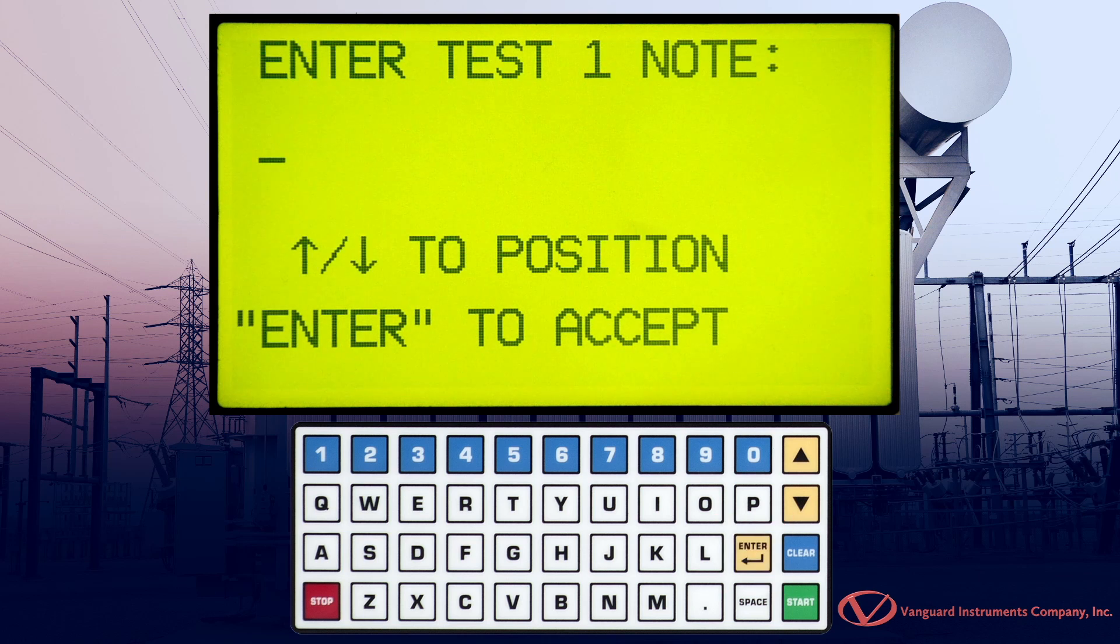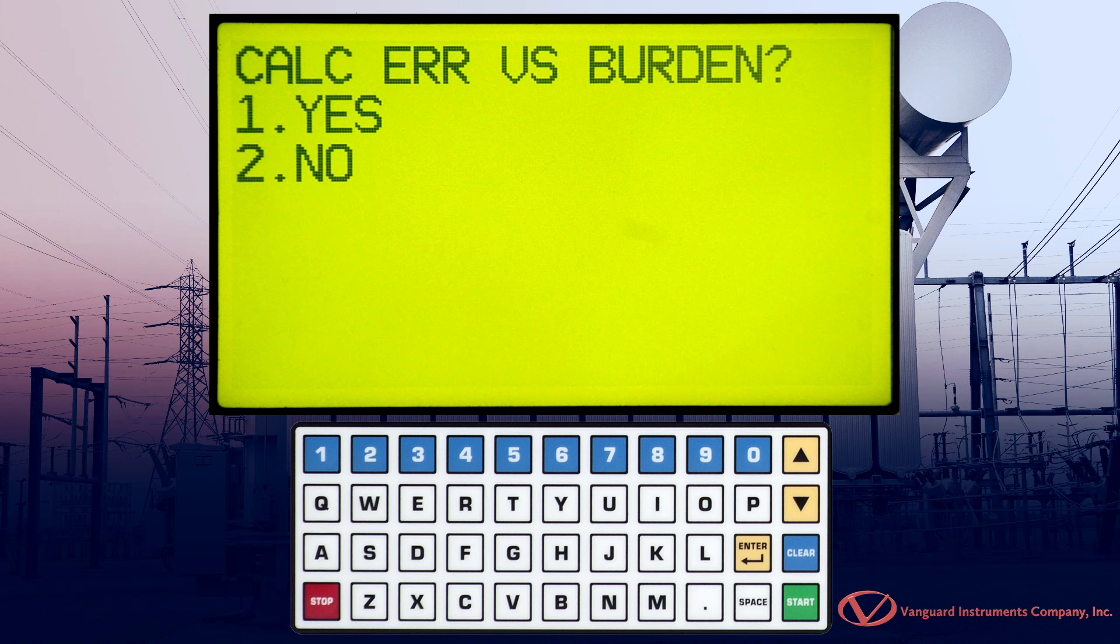Now, we can add any relevant notes about the test using the keypad. We'll leave this blank for this example and just press Enter. The EZCT-2000C can calculate the ratio and current phase error values and print the error tables in the printout. Press the 2 key to select No.